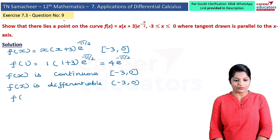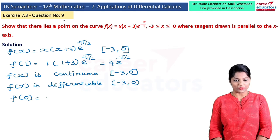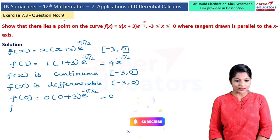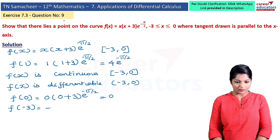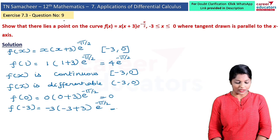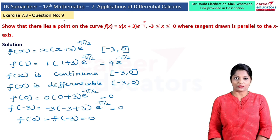Now we check f(a) = f(0): substituting x = 0 gives 0·(0+3)·e^(−0/2) = 0. Next, f(b) = f(−3): substituting x = −3 gives (−3)·(−3+3)·e^(−(−3)/2) = 0. So f(0) = f(−3) = 0.